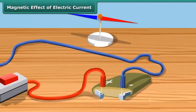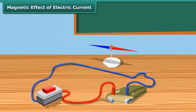When an electric current is passed through a wire, it behaves like a magnet. Let us perform a simple experiment to understand it.